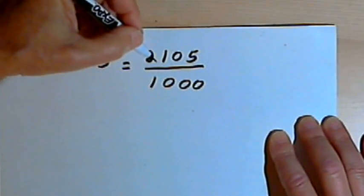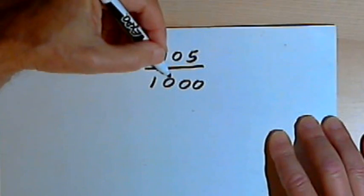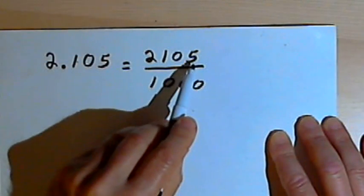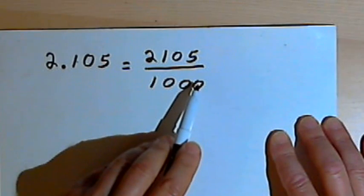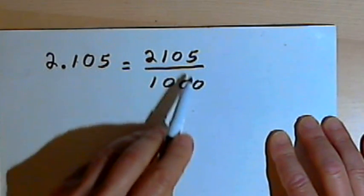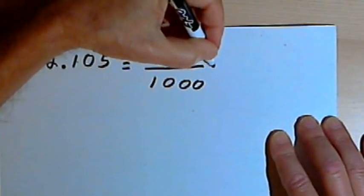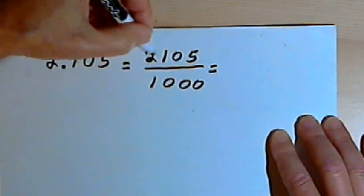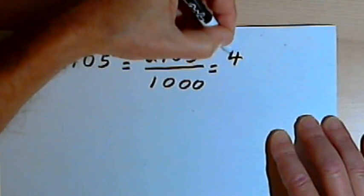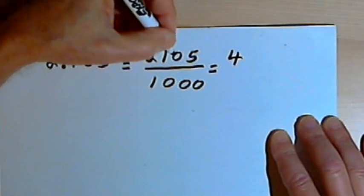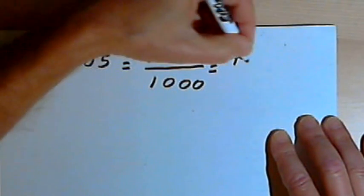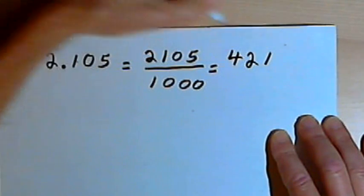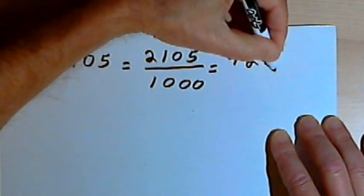Now I've got the fraction 2105 over 1000. I can reduce this. If a number ends in a 5 or 0, I can divide it by 5. So I know I can reduce this fraction. Dividing the numerator by 5, 5 into 21 goes four times. It would be one remainder. And then I want 5 into 10, that's 2. There's no remainder for that. And then 5 into 5 is 1. So I've got 421.